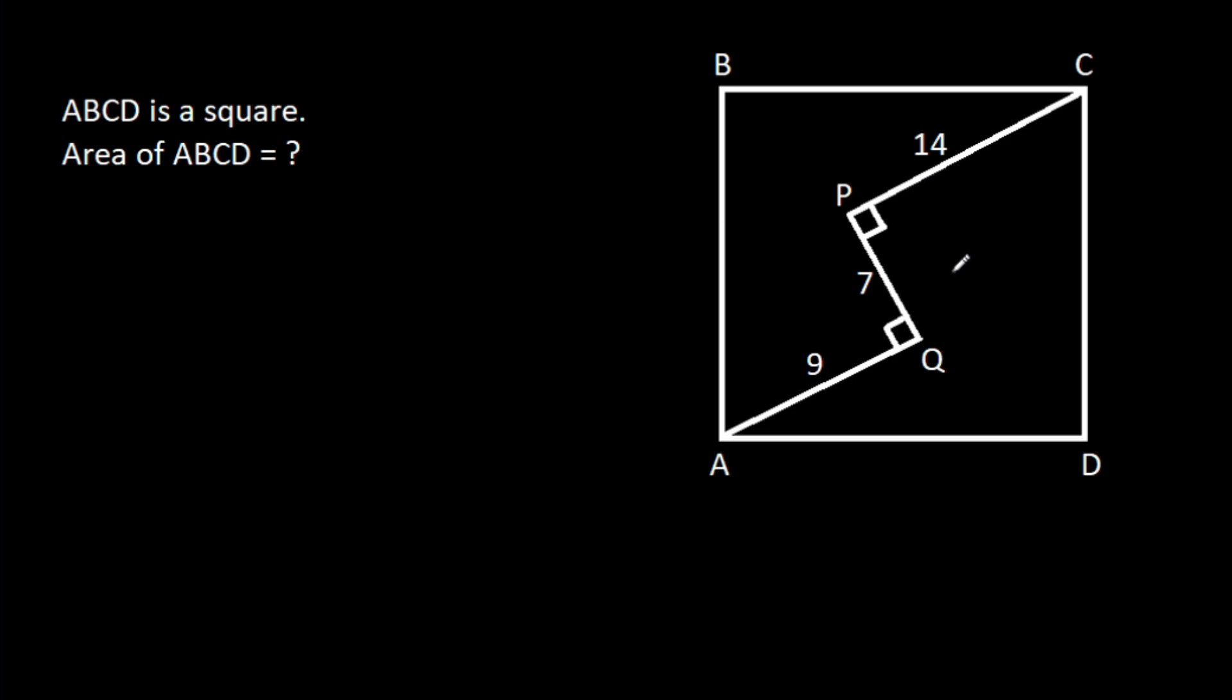Then we have to find area of ABCD. So ABCD is a square. That means AB will be equal to BC. Let's suppose X, so AB is X and BC is X, and this angle will be 90 degrees.